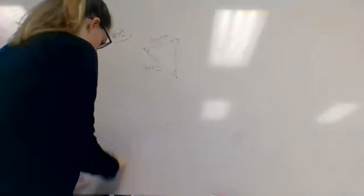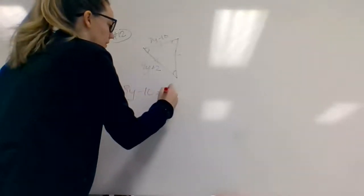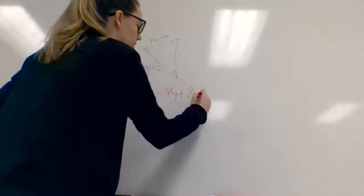So my marker's running out here. So 8y minus 10 equals 4y plus 2.